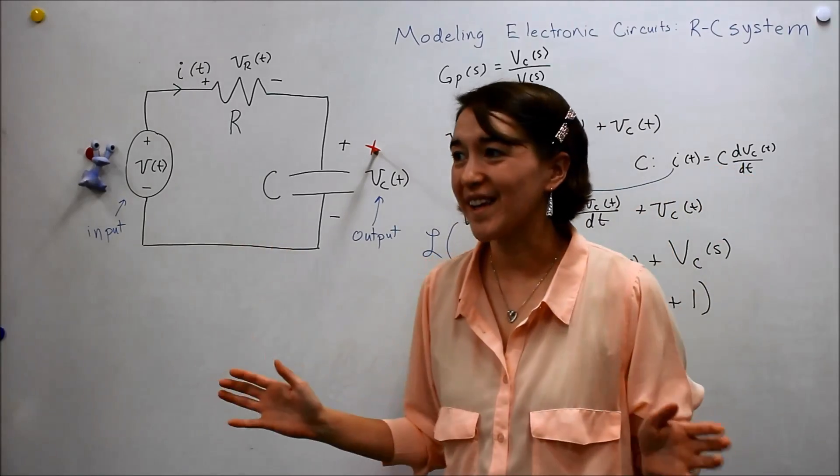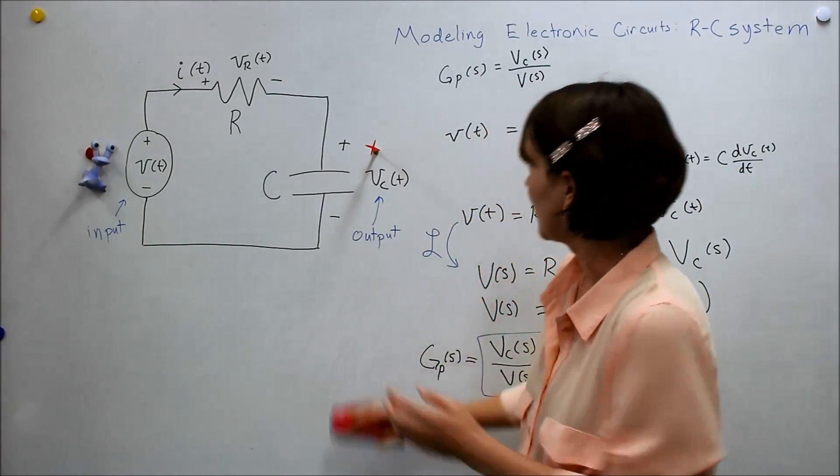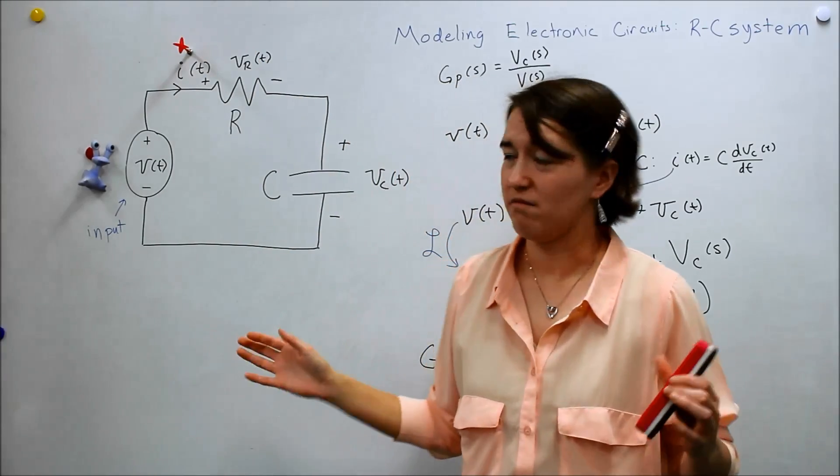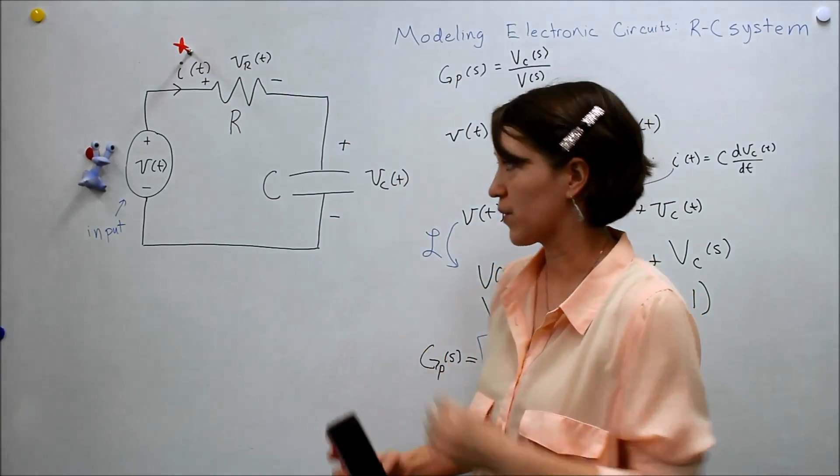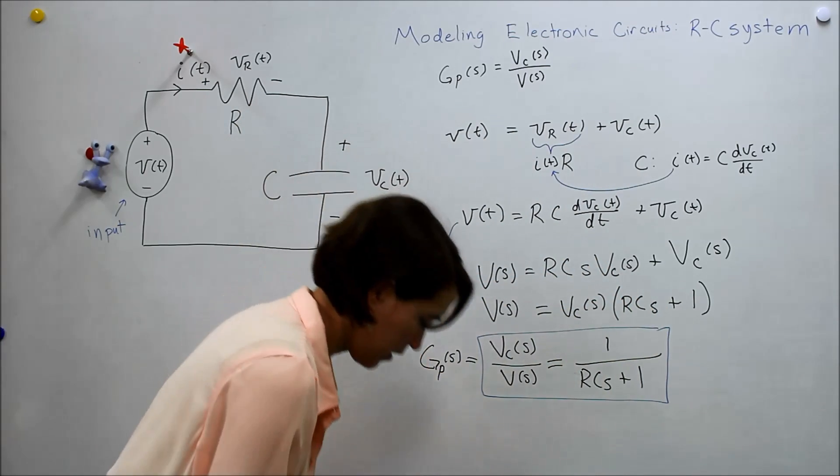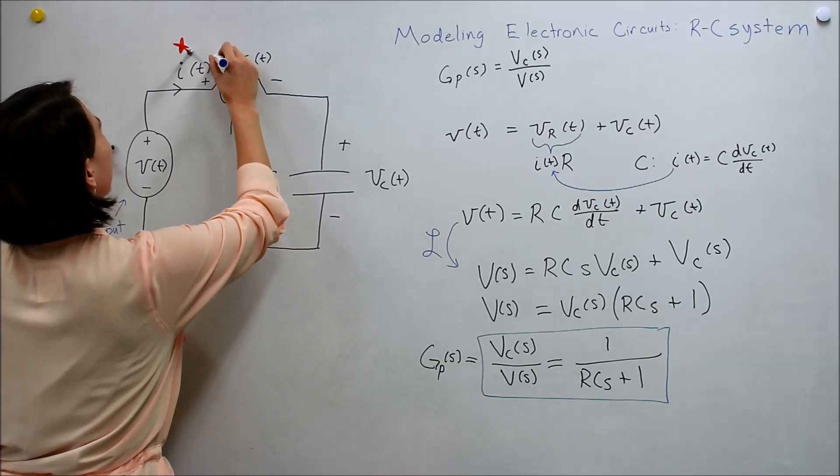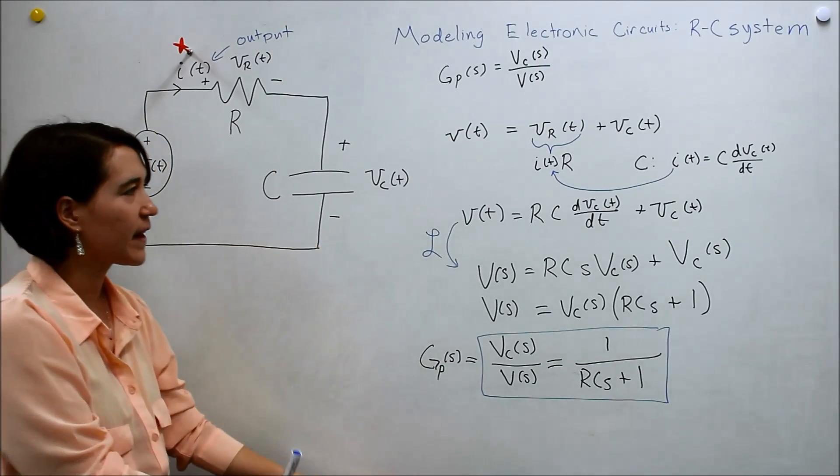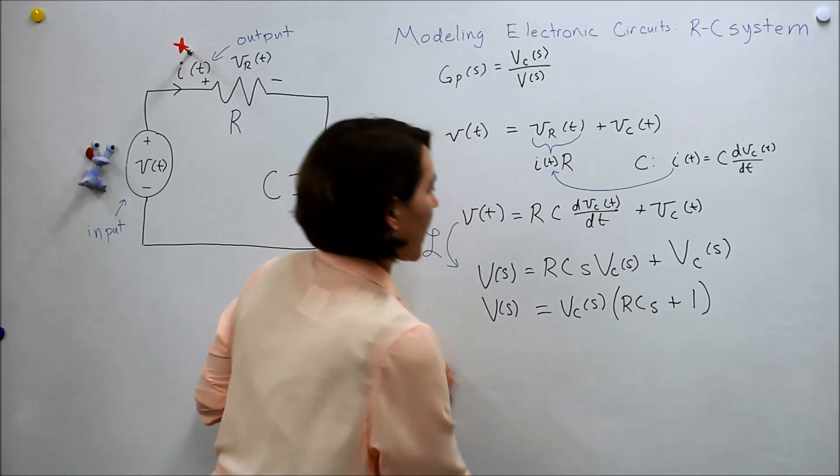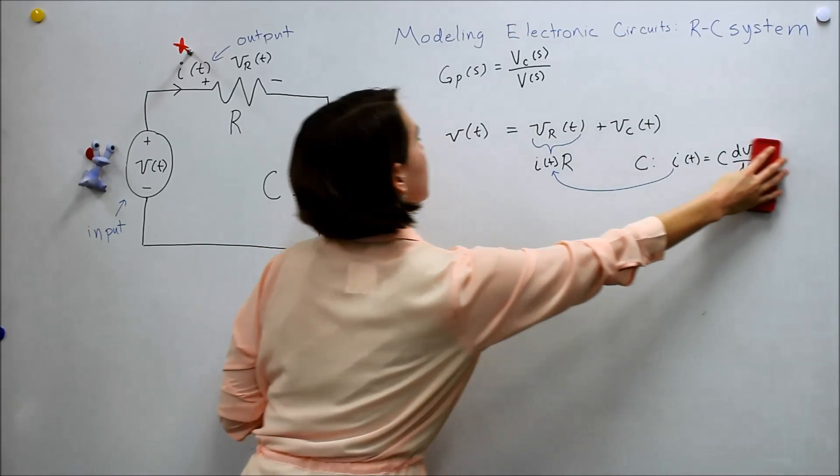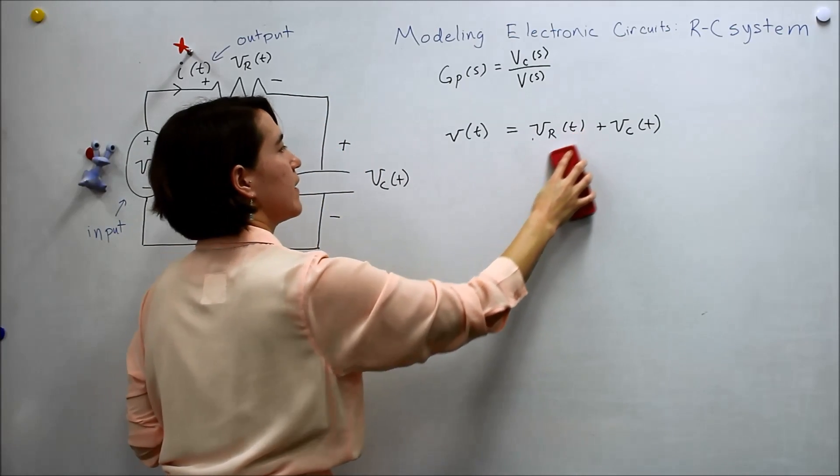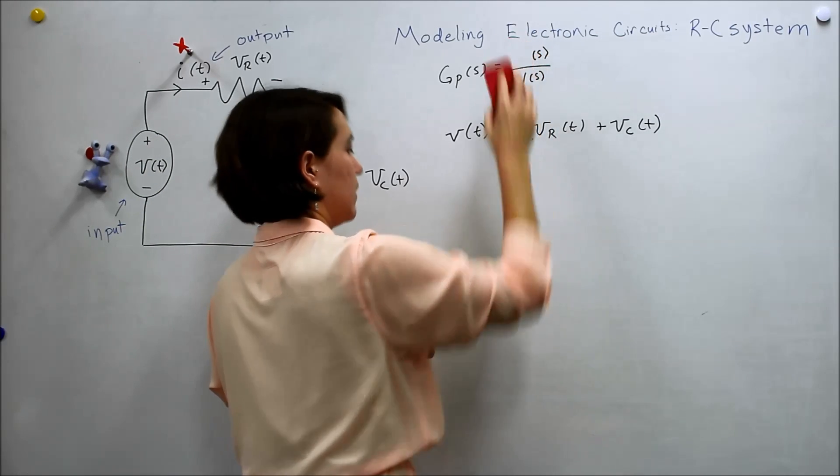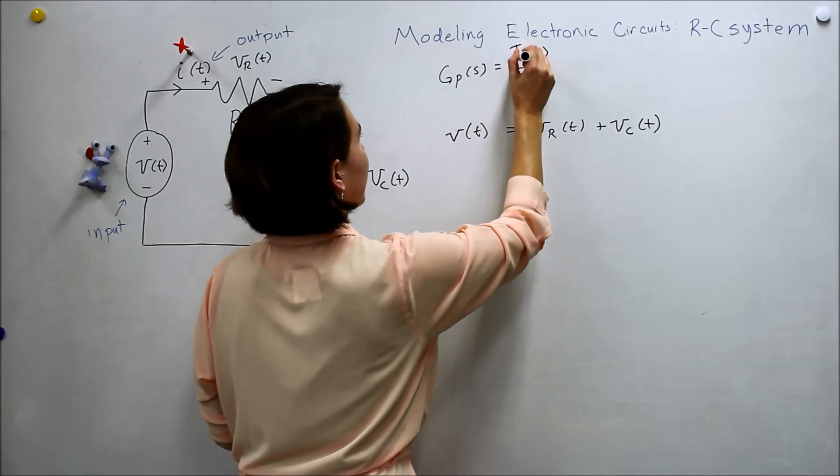But wait. What if we don't care about the voltage? This is no longer our objective and our objective is now to find the current. Well, we do the same approach and I'll walk you through it real quick. So now our, oh no. So now our output is the current. Okay.